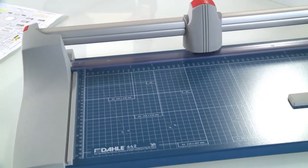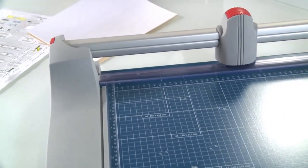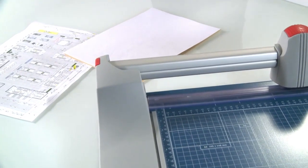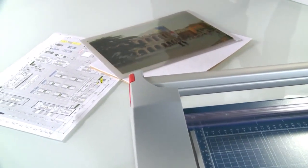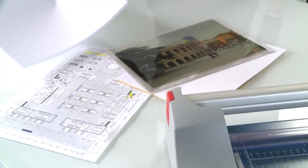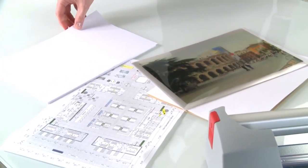These machines cut a wide range of materials, such as paper, thin card, films or foils, up to 3.5 millimeters thick. This is the equivalent of 30 to 35 sheets of paper.